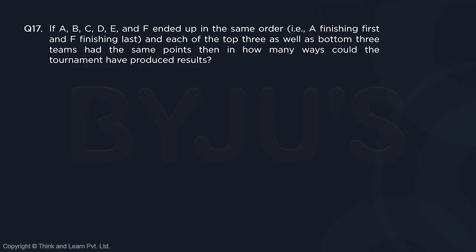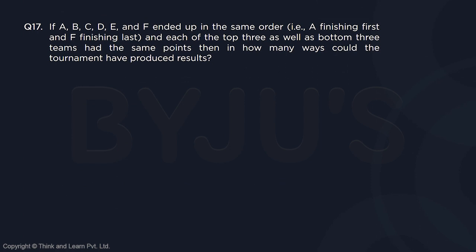Now let us move on to question 17. If A, B, C, D, E and F ended up in the same order again, and each of the top three as well as the bottom three had the same number of points — then bottom must be 3 points since 4 cannot be divided equally among three teams, giving 1, 1, 1. And top group must be 4, 4, 4 since 12 points divided equally among three is 4.